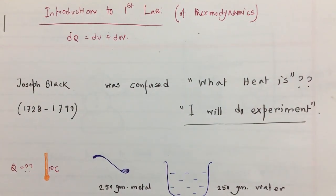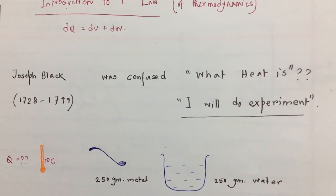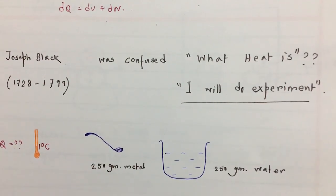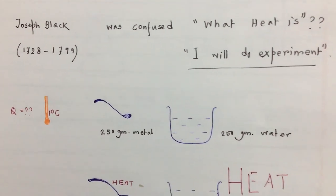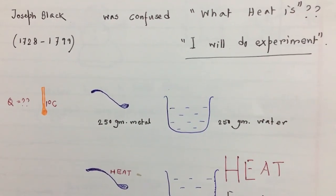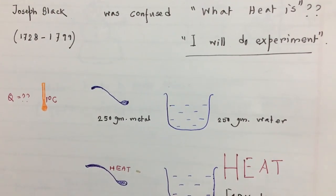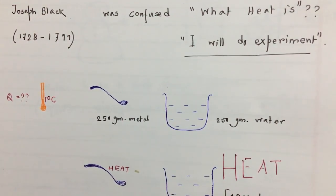Hello, this is the introduction of first law of thermodynamics. It was Joseph Black who was confused between what heat is, so he thought that he would do an experiment. First, he took a silver spoon and some quantity of water. The silver spoon mass was 250 grams and water mass was also 250 grams.